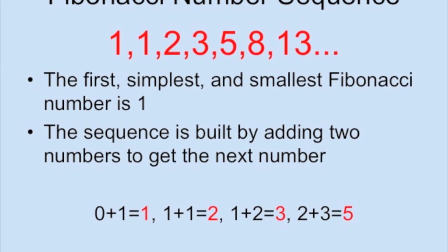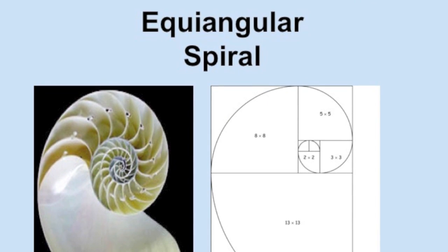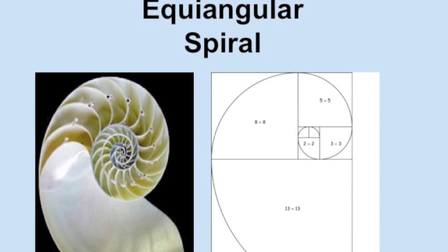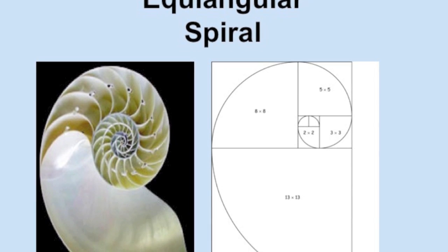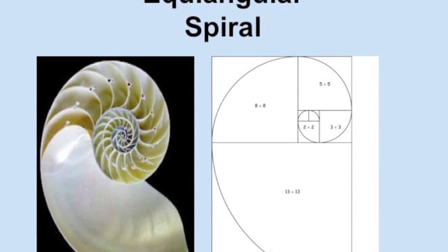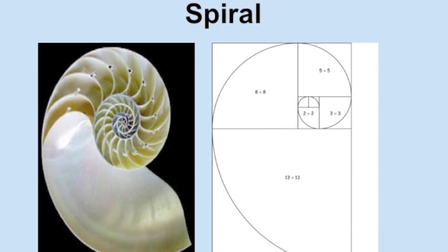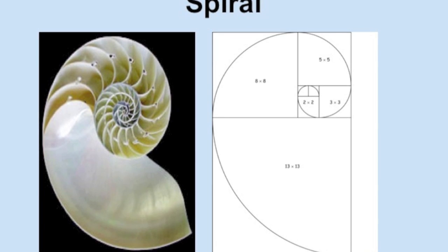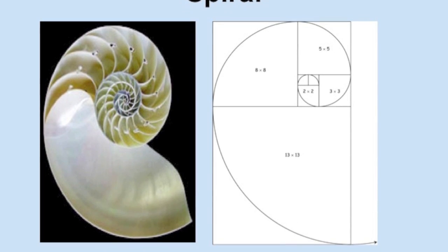The sequence can continue forever. The Fibonacci sequence can be seen in the spiral of a snail's shell. You can recreate this spiral by drawing a series of squares with side lengths that follow the Fibonacci sequence. Today's activity will focus on recreating the Fibonacci spiral on graph paper.